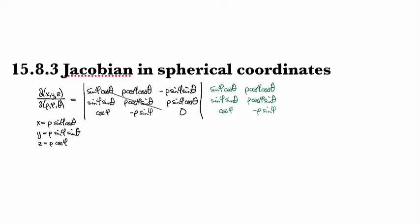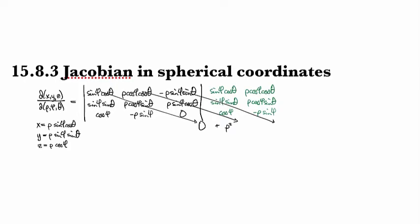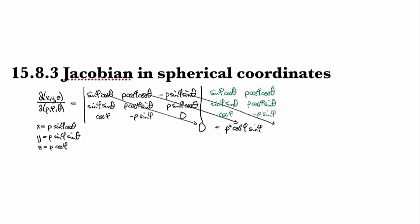So we're going to have this diagonal product and then this diagonal product. The first one has a zero in it, so we get zero. The next one gives us ρ². We've got cosine φ showing up in the first and last, so two cos(φ)'s, sine φ in the second, and then cosine squared θ.